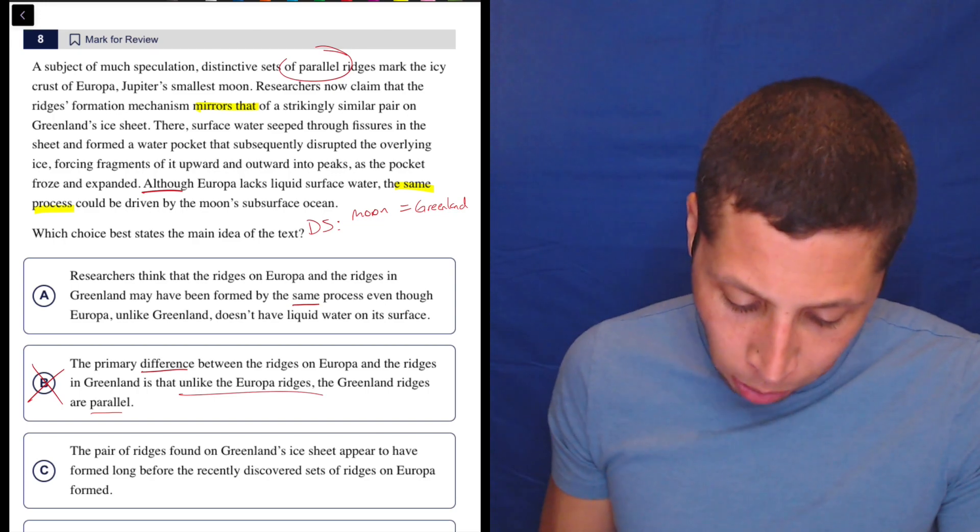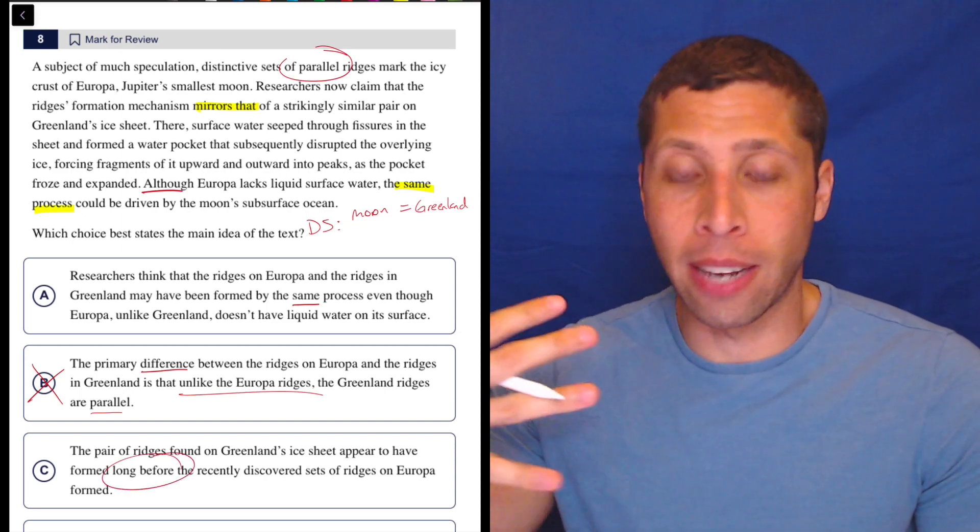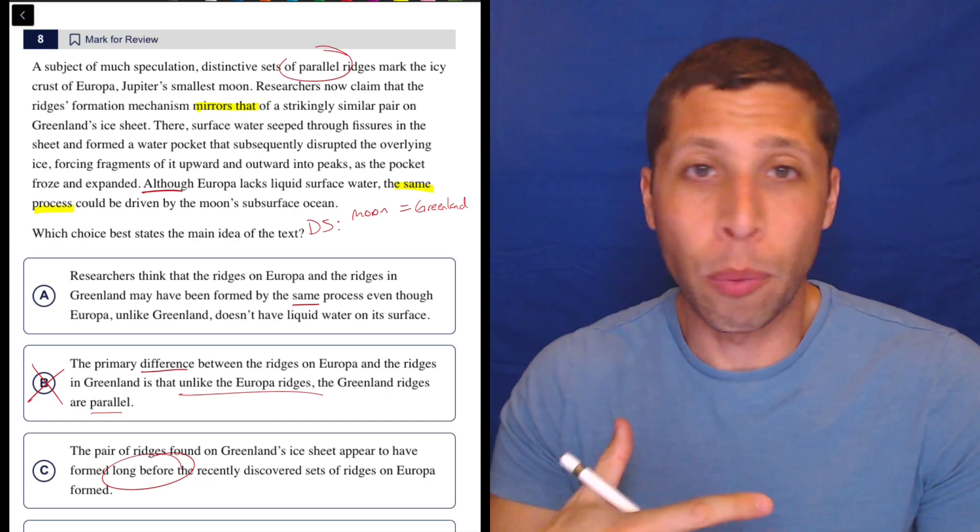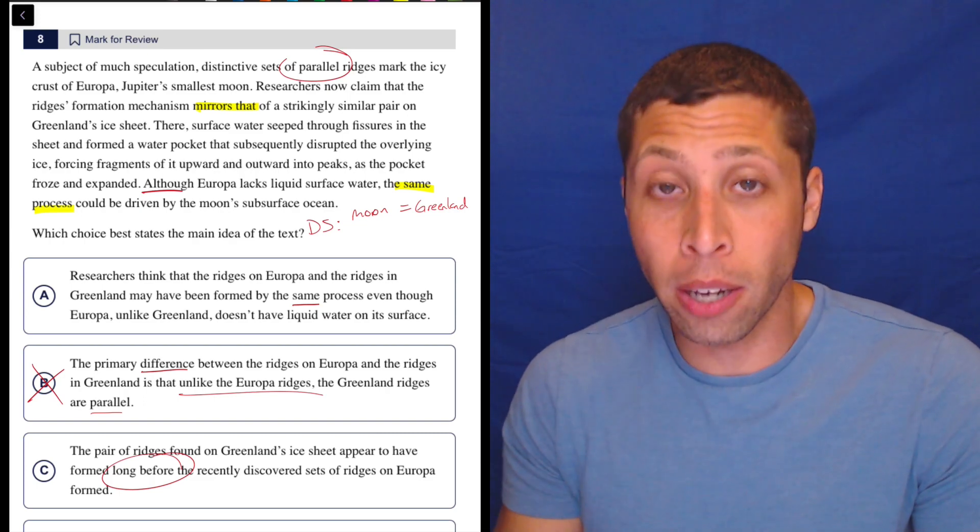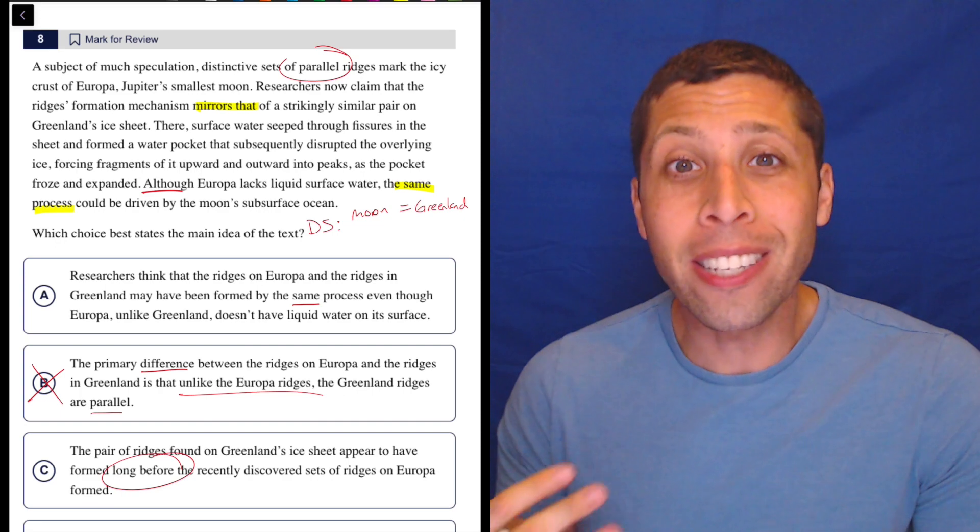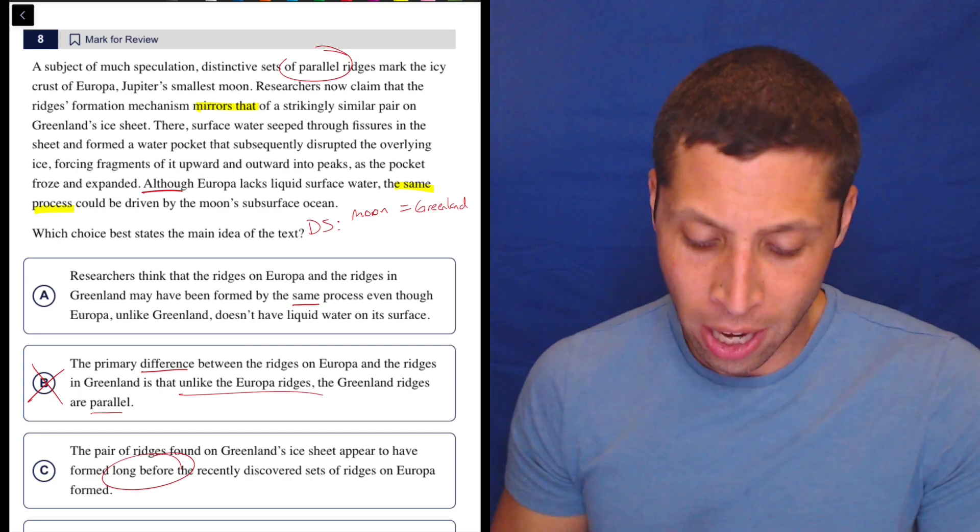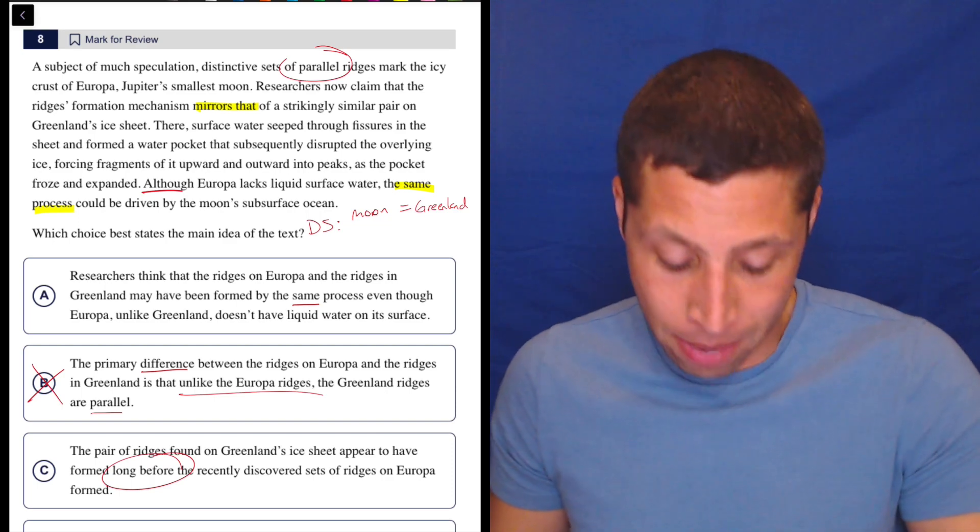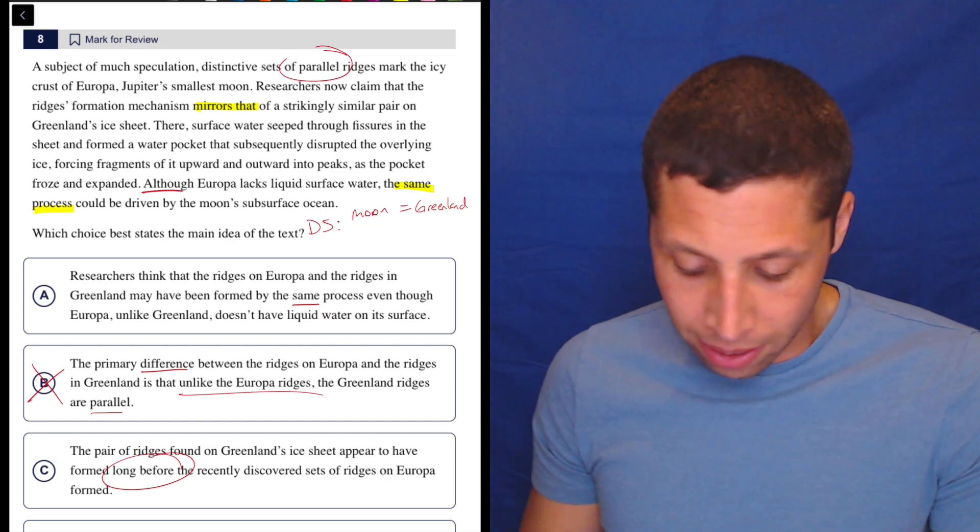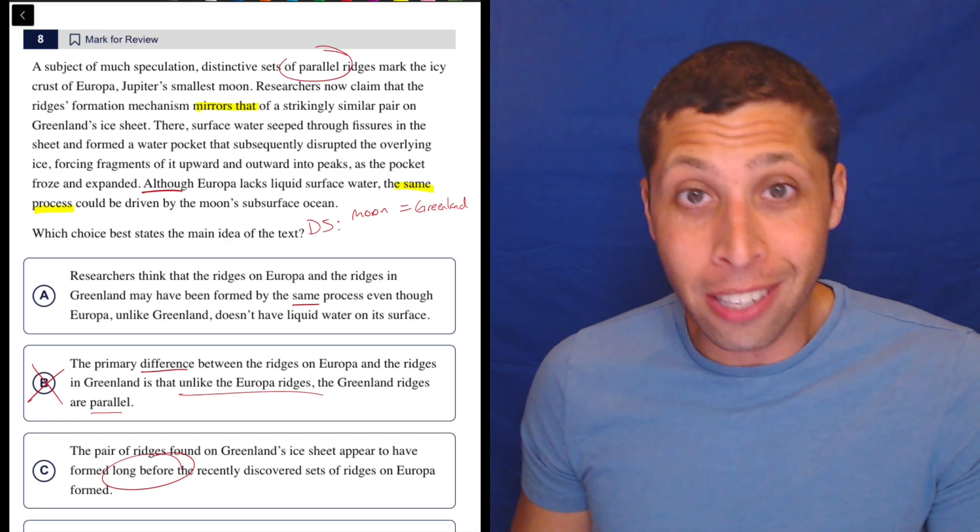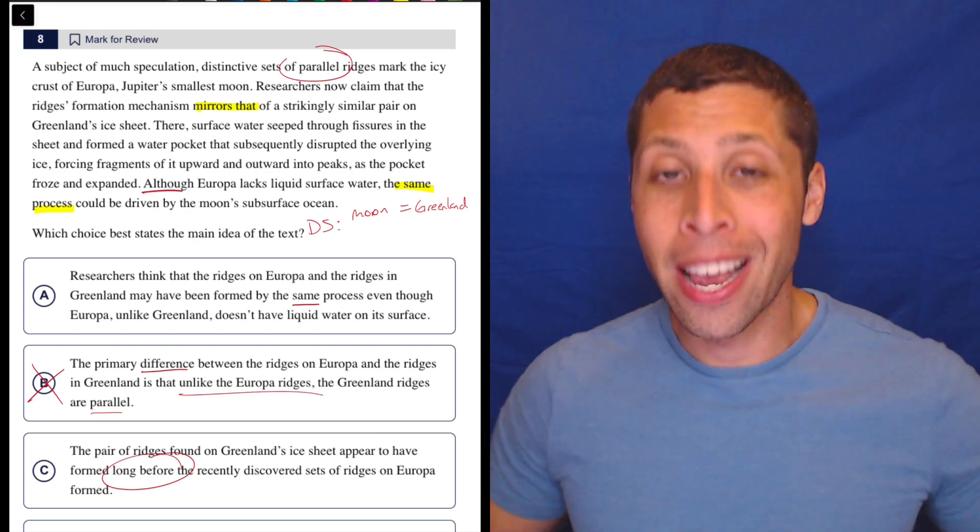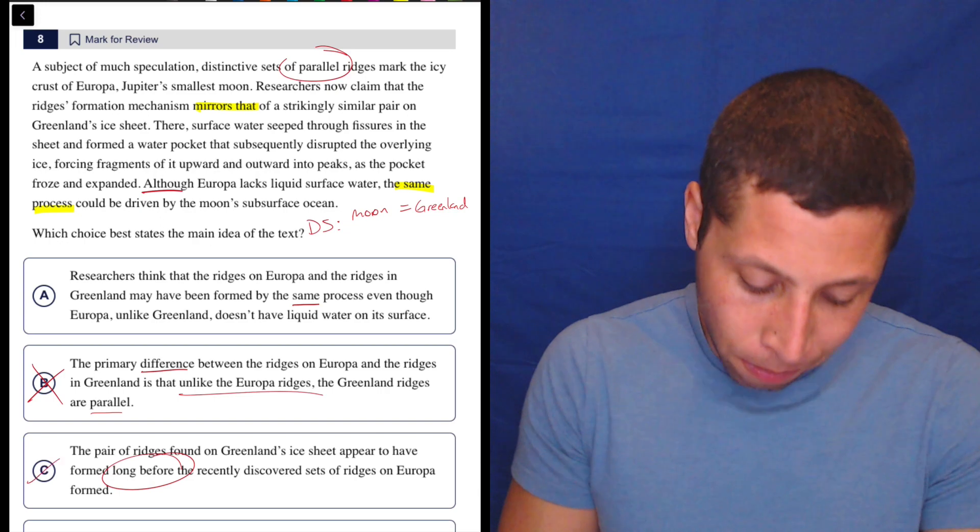Anytime a choice brings up the idea of time, things happening in sequence or in some sort of order, we got to be careful. That might not be wrong. It depends on what the passage says, but it's at least an idea that we can go looking for in the passage. And this wasn't about time. What does our dumb summary say? It's about them being the same. And so I don't know when these things happened, but more generally, from a dumb summary kind of perspective, if they're from different times, that sounds like a difference. So I don't love that. Let's look at D.